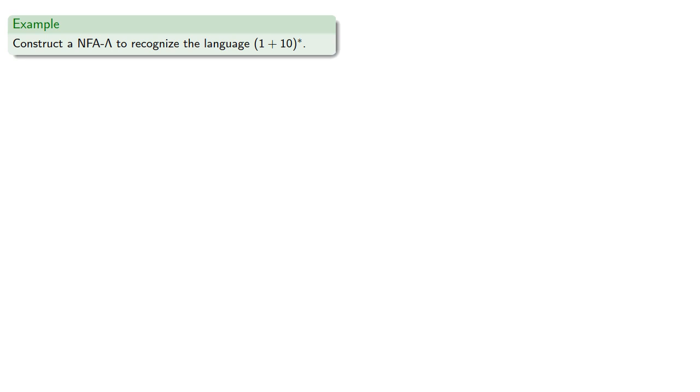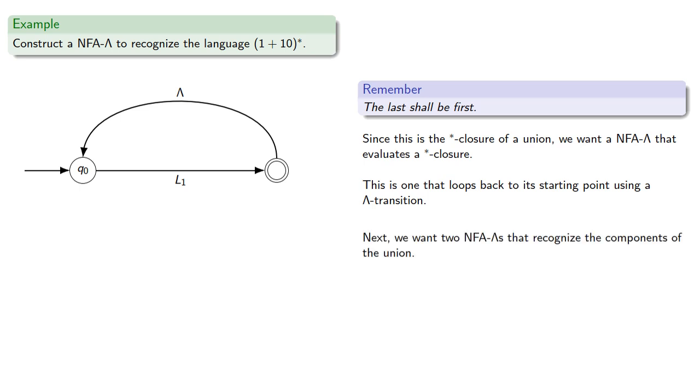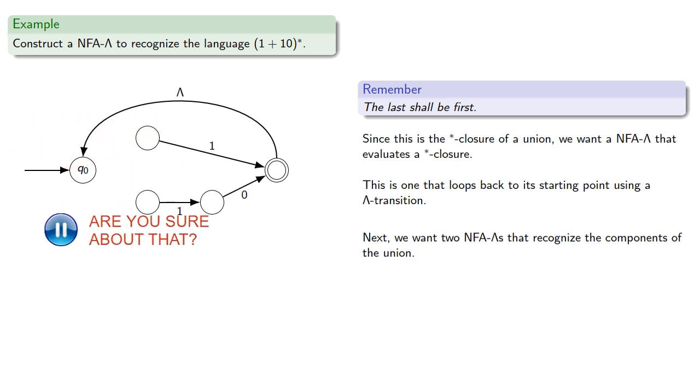So a useful idea to remember, the last shall be first. Since this is the star closure of a union, we want an NFA lambda that evaluates a star closure, and this is one that loops back to its starting point using a lambda transition. Next we want two NFA lambdas that recognize the components of the union, with a lambda transition leading to the starting state of each.